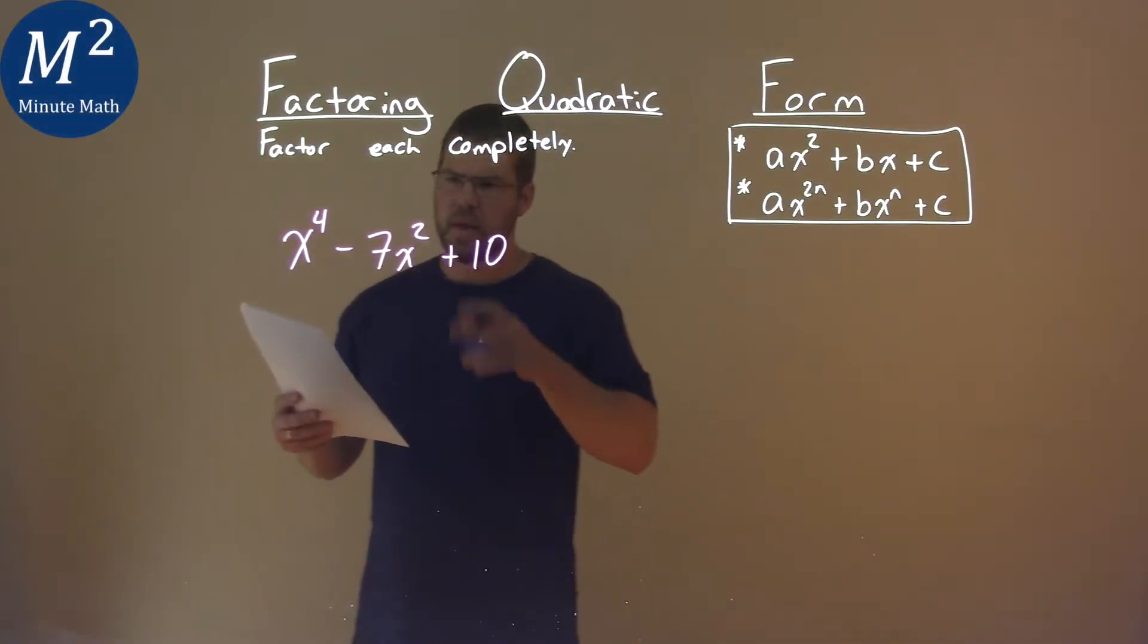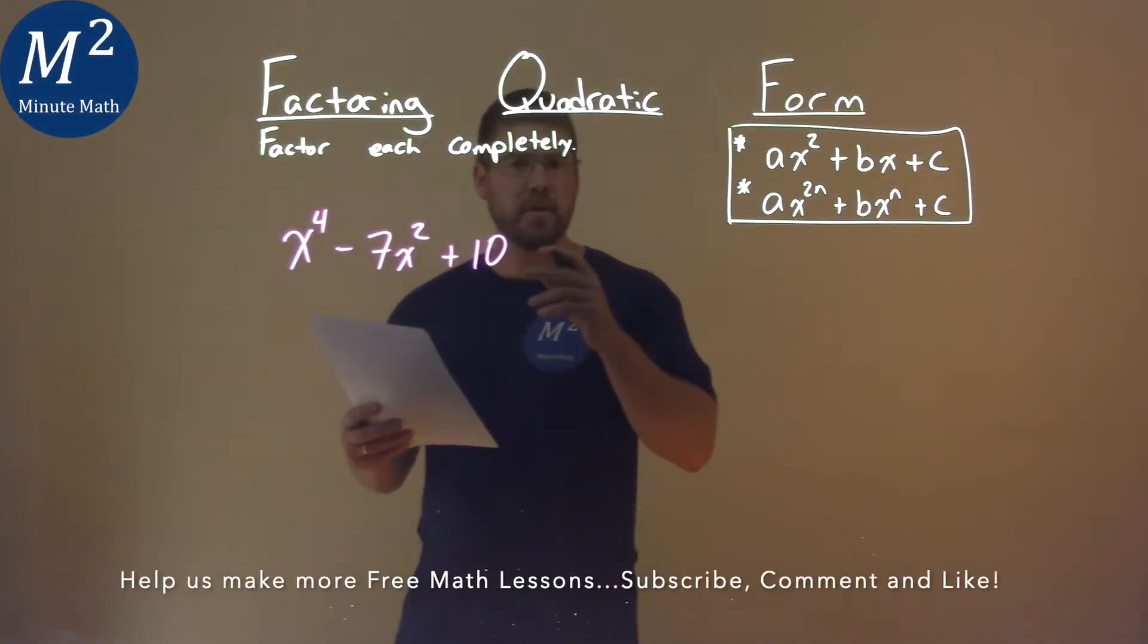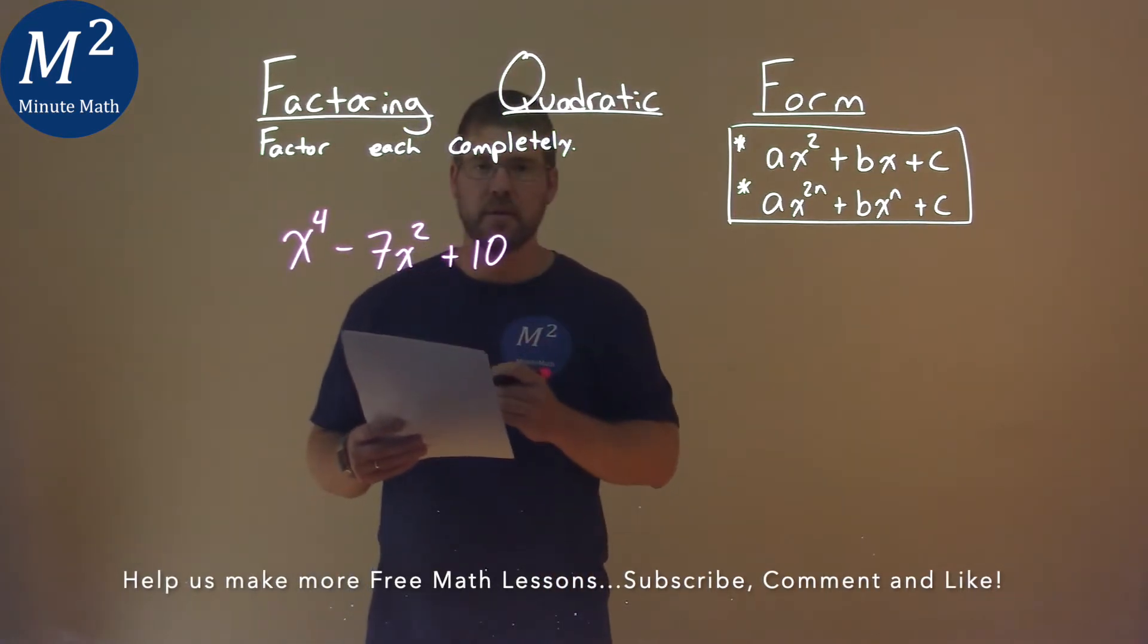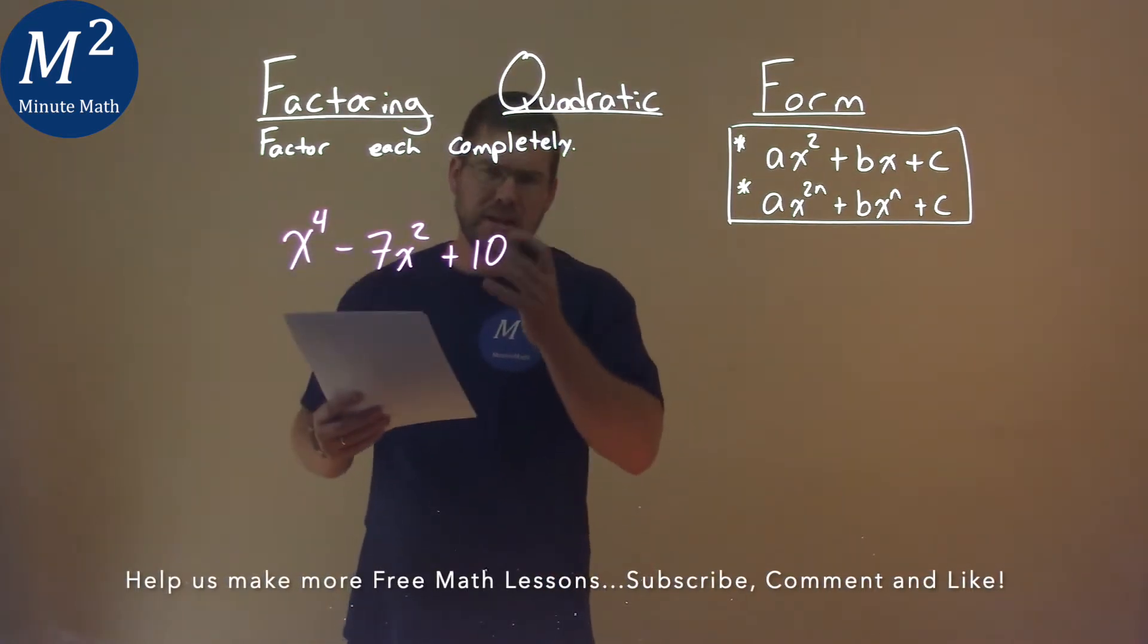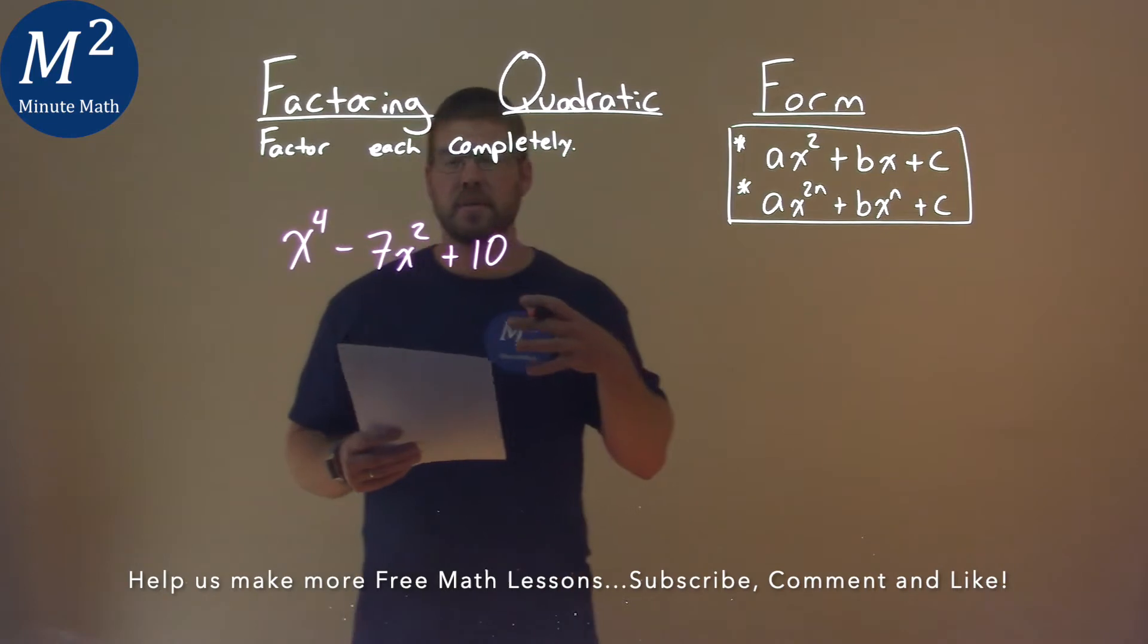We're given this problem right here, x to the fourth minus 7x squared plus 10, and we need to factor completely. Since this is in quadratic form, we factor just like a normal quadratic.